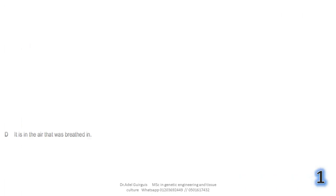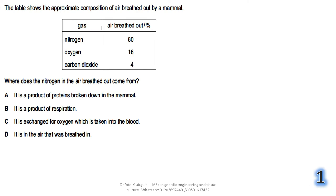The first question: the table shows the approximate composition of air breathed out by a mammal. In this table you find gas and percentage of air breathed out. For nitrogen: 80%, oxygen: 16%, carbon dioxide: 4%.